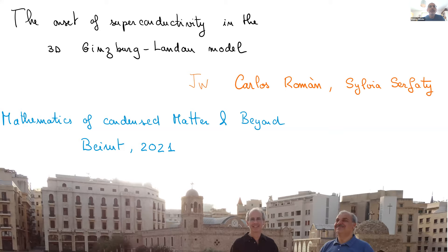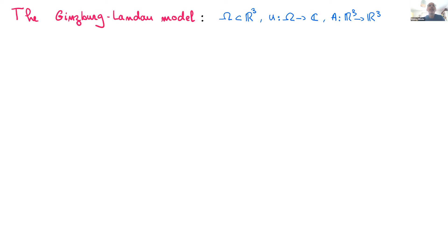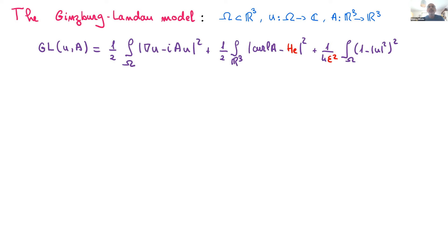What I'm going to talk about is the 3D Ginzburg-Landau model, mainly in R³, with an order parameter u which is complex valued, and a connection A, which can be a one-form. The functional is this one. The parameters are the external magnetic field and the inverse of the Ginzburg-Landau parameter.